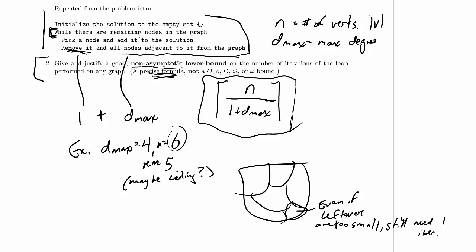Not only do we remove at least one node each time, but we add at least one node to the independent set. So the size of the independent set that we've computed grows by one for every iteration, and there are at least n over 1 plus d max iterations, which means that the size of the independent set is at least n over 1 plus d max.